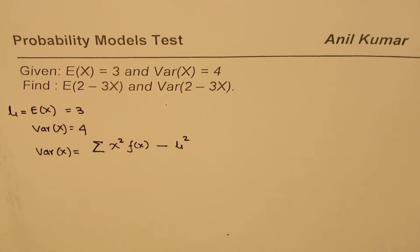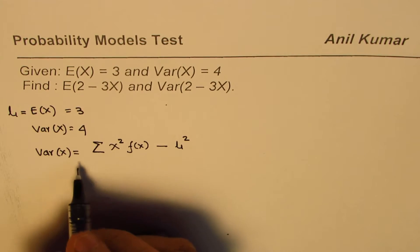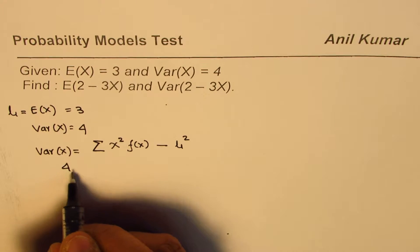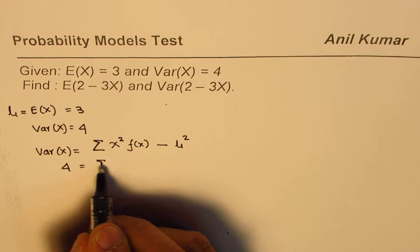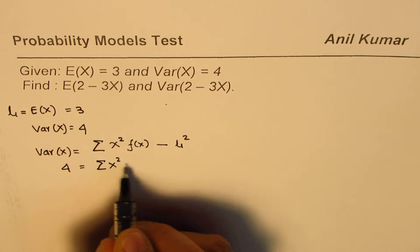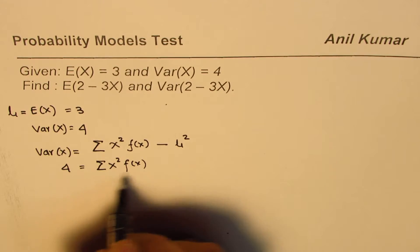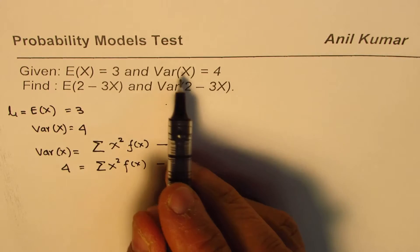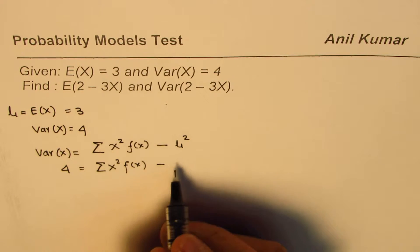Mean and expected value is same. So in our case, we are given variance of 4. And this particular thing here is x squared fx. We'll call this a constant and minus expected mean is